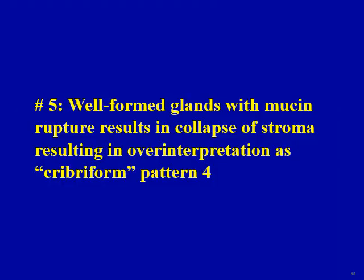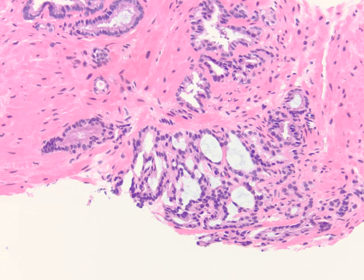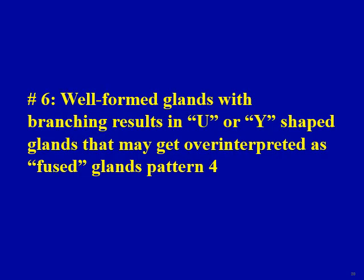Pitfall five: when you have well-formed glands with mucin rupture, it results in collapse of stroma which may give a cribriform-like pattern. In this example, the glands have mucin rupture with stromal collapse so they appear crowded together, but if you look carefully there is still some eosinophilic stroma appreciable between these glands. Again, don't over-interpret this type of morphology as cribriform Gleason pattern 4.